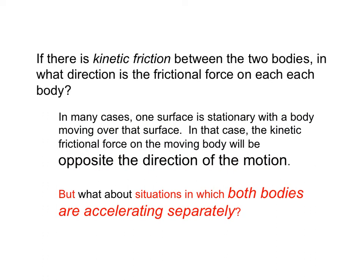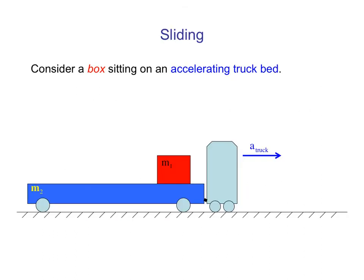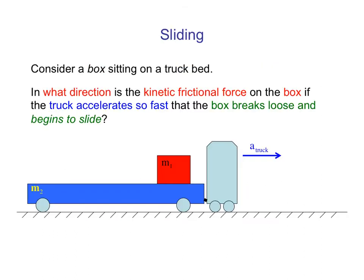When it gets dicey is when you get into a situation in which both of the bodies are accelerating separately. So here we have that situation. The truck is going to accelerate to the right, and the box, which is sitting freely on the bed of the truck, is going to end up breaking loose and moving in some way. Its acceleration isn't going to be the acceleration of the truck's. The question is, what is its acceleration going to be?